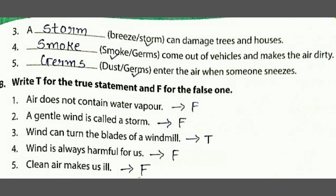Then: enter the air when someone sneezes — dust or germs? The answer is germs. When someone sneezes, germs enter the air. Then write T for true and F for false. First: air does not contain water vapor — that is false. Second: a gentle wind is called a storm — that is also false; a gentle wind is called a breeze. Third: wind can turn the blades of a windmill — that is true. Fourth: wind is always harmful for us — that is false; wind is helpful for us.